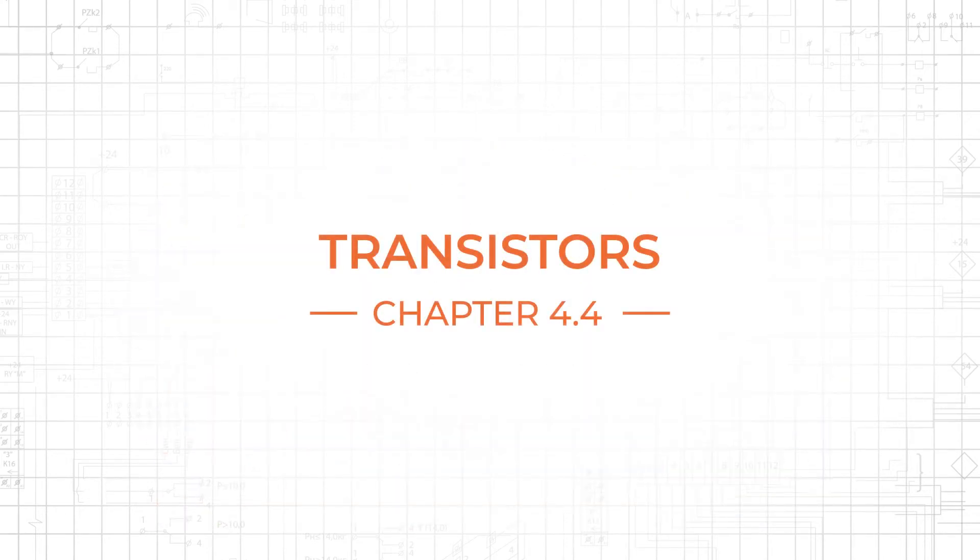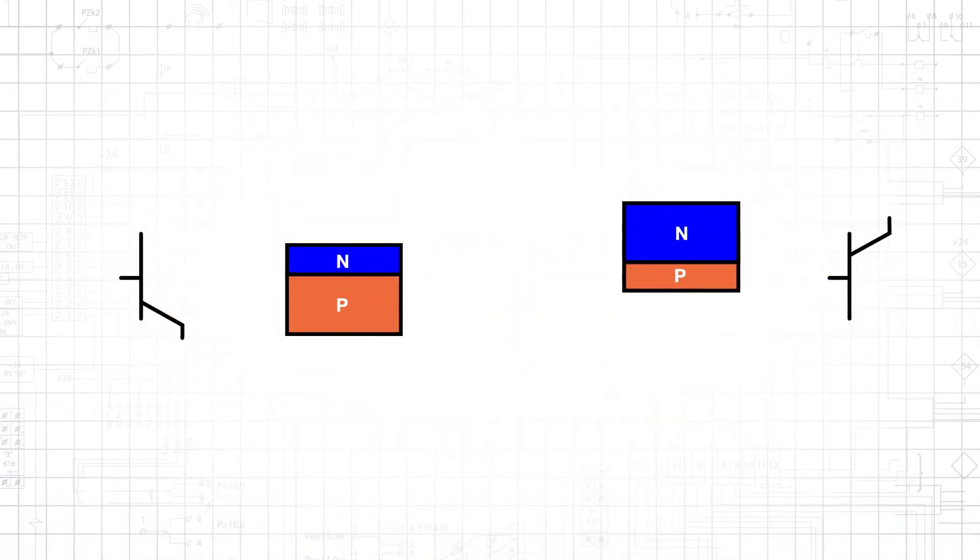In a previous tutorial, we learned about the special characteristics of a PN junction. If we add one more section of a semiconductor material to a PN junction, we have a bipolar junction transistor, or BJT.